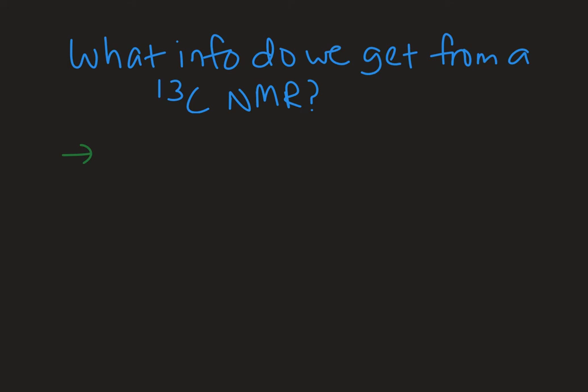One of the pieces of information that I do get out of a carbon-13 NMR is the number of unique carbons in that molecule, and that is going to equal the number of signals that is observed.